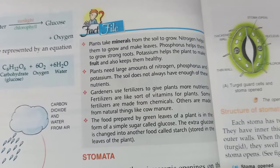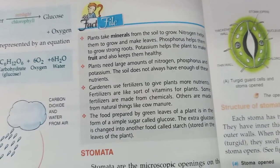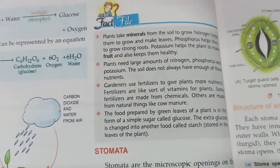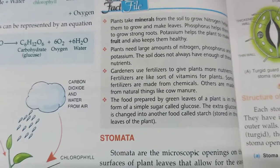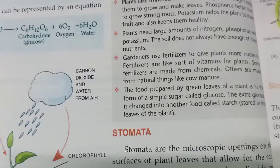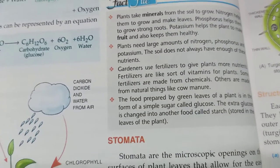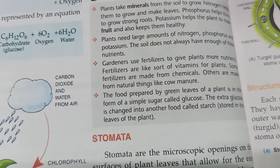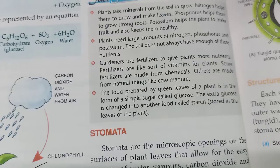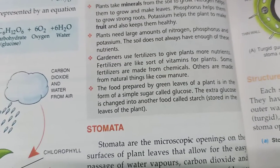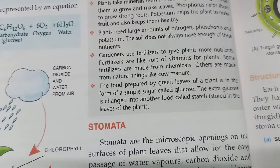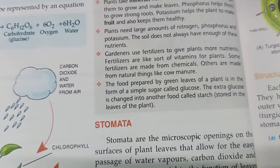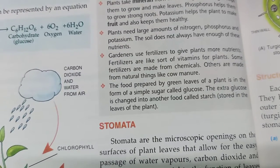Because the soil does not always have all these nutrients, farmers sometimes give fertilizers as well as urea in their fields. Gardeners also use fertilizers to give plants more nutrients. Fertilizers are like salt or vitamins for plants — some fertilizers are made from chemicals, others are made from natural things like cow manure. These fertilizers provide the essential nutrients for the growth of plants.